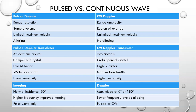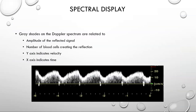With the spectral display, we have multiple shades of gray on the Doppler spectrum. These gray shades are related to the amplitude of the reflected signal — the number of blood cells creating the reflection is related to the brightness of the gray on the display. The x-axis indicates time, and the y-axis indicates velocity or speed.